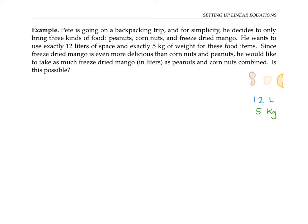In order to describe this situation in equations, we're first going to need to decide on some variables to describe our unknowns. We don't know and Pete would probably like us to tell him how much peanuts, corn nuts, and freeze dried mango he should bring to satisfy these criteria.